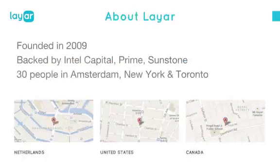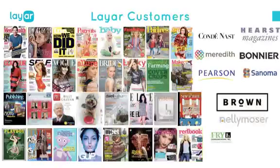We also have offices in New York on Varick Street near SoHo, and in Toronto. Looking at our Layer customers, the largest group are magazines — for instance Men's Health, Porter magazine by Net-a-Porter, Ink magazine, Parents, Baby, and many others. We work with these magazines because of their reach, and through them with a lot of publishers. Basically all the big publishers are using us.